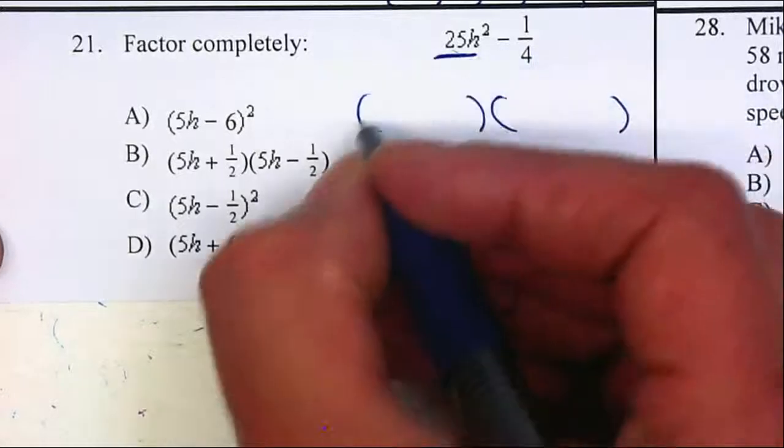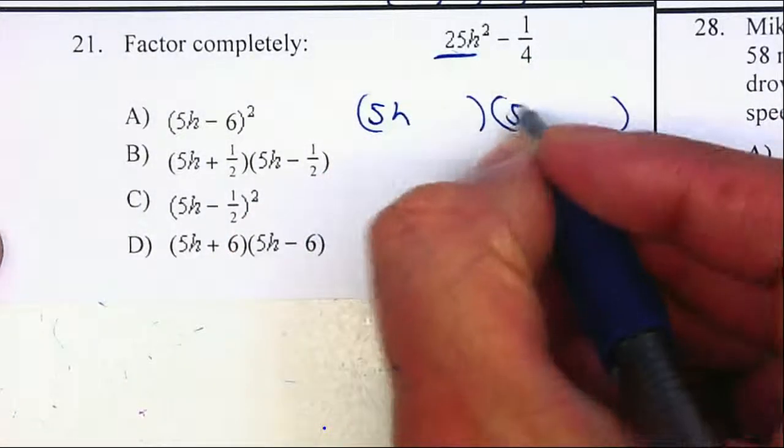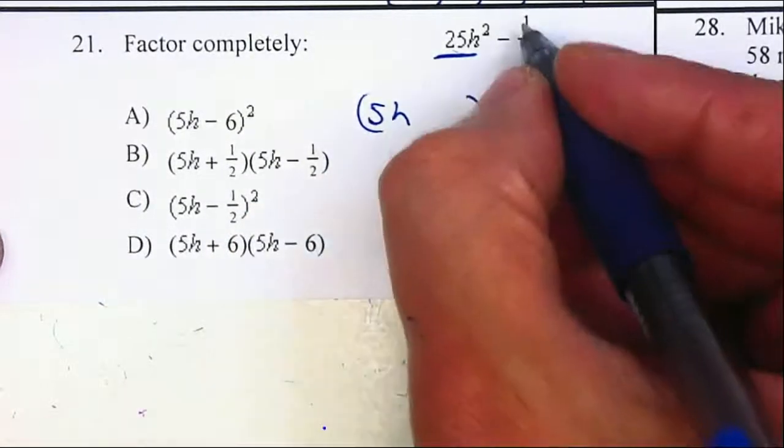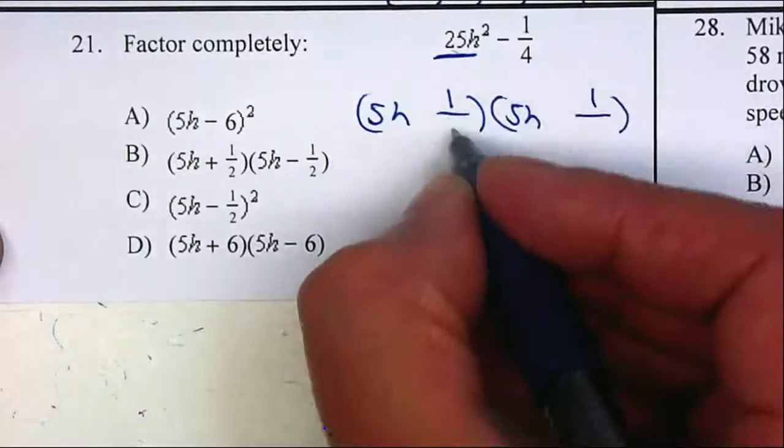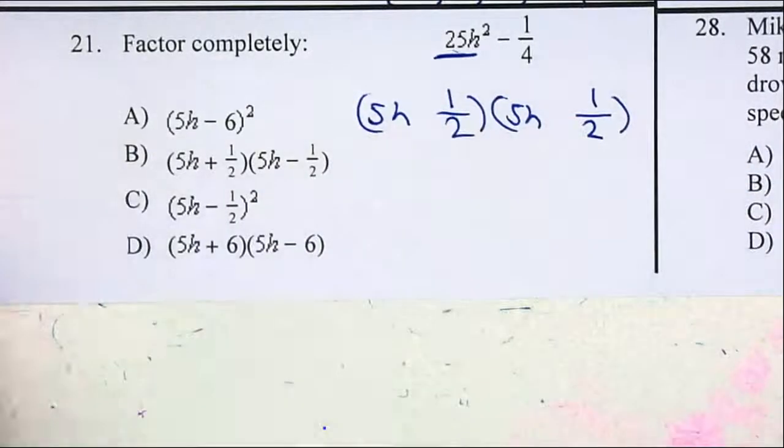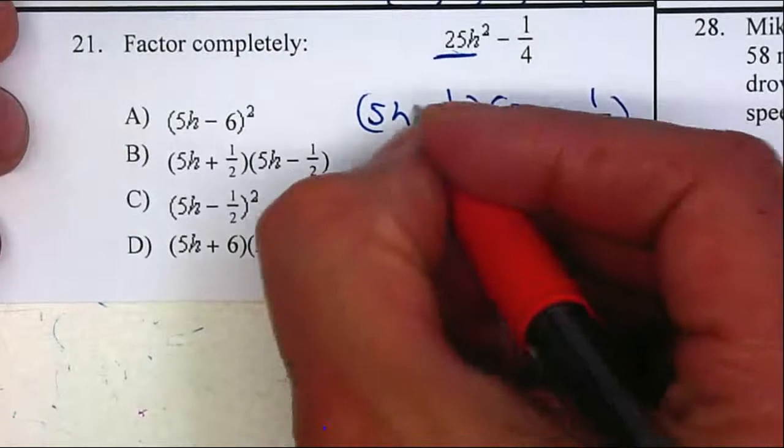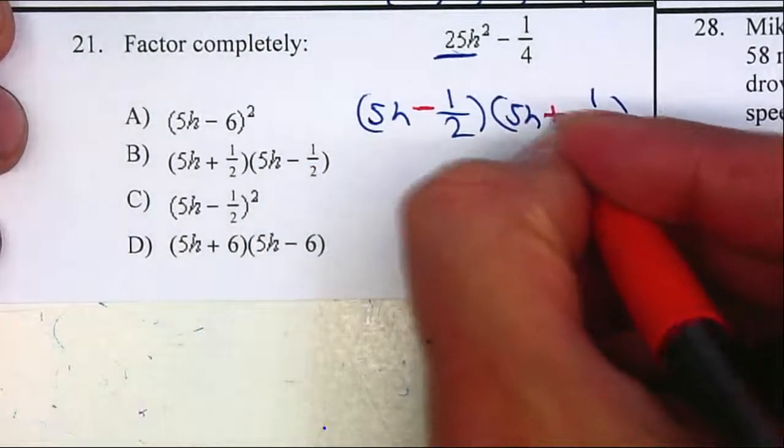Factors of 25H squared will give me 5H and 5H. Factors of 1 will be 1 and 1 fraction. Factors of 4 will be 2 and 2. This is a negative 1/4, so therefore 1 negative and 1 positive.